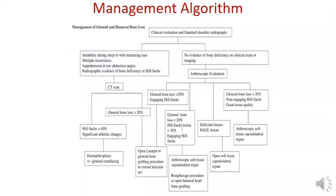The management algorithm for shoulder instability includes clinical evaluation, CT, and arthroscopic evaluation. If the Hill-Sachs lesion is larger than 40%, hemiarthroplasty is indicated. If glenoid bone loss is larger than 20%, open Latarjet is indicated regardless of Hill-Sachs engagement. If glenoid bone loss is less than 20% but there is an engaging Hill-Sachs lesion, arthroscopic Bankart repair plus remplissage is indicated. If there is a HAGL lesion, open Latarjet is indicated. If glenoid bone loss is less than 20% or there is a non-engaging Hill-Sachs lesion with good tissue quality, arthroscopic Bankart repair alone can be performed.